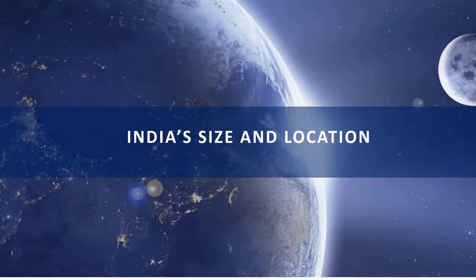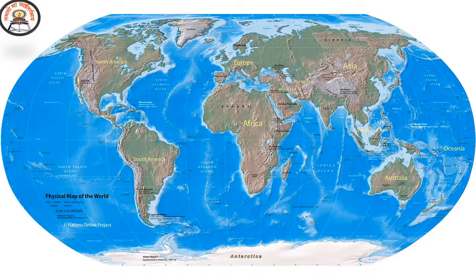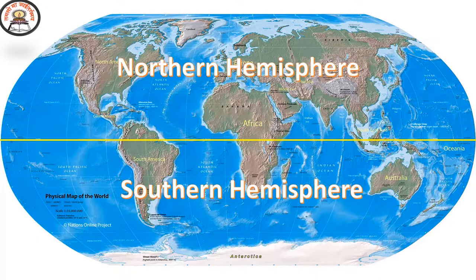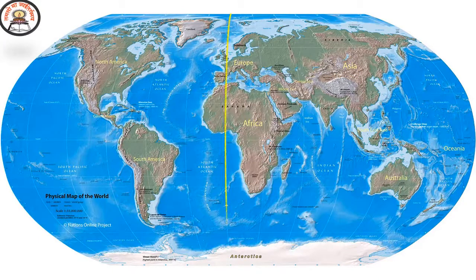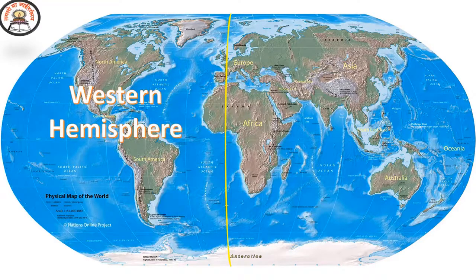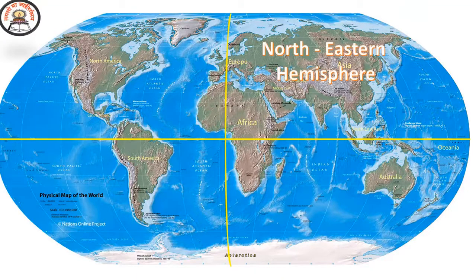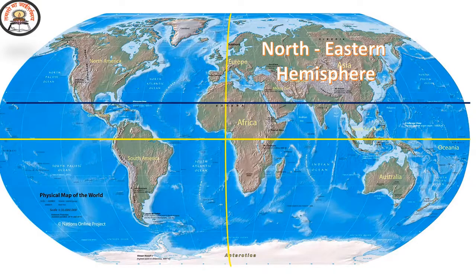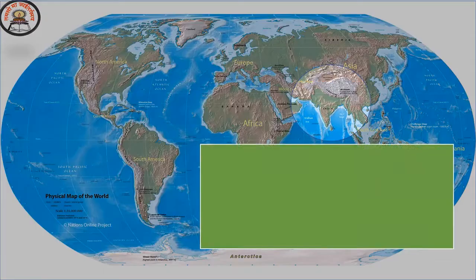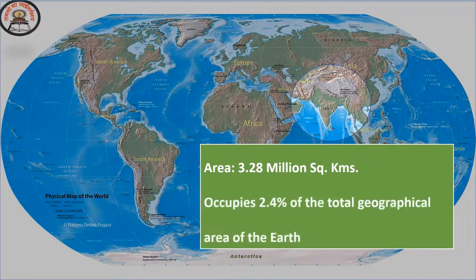Now let's learn India's size and location. The equator divides the earth into the southern hemisphere and the northern hemisphere. The equator and the prime meridian together create four divisions. India lies completely in the northeastern hemisphere. The Tropic of Cancer passes through India, cutting it into almost two equal halves. India has a total area of 3.28 million square kilometers, occupying 2.4 percent of the total geographical area of the earth.